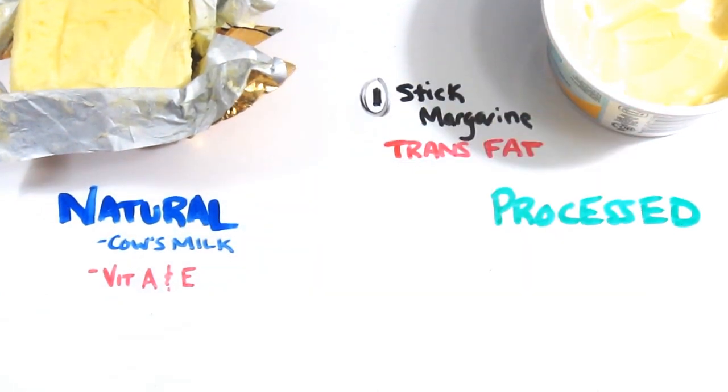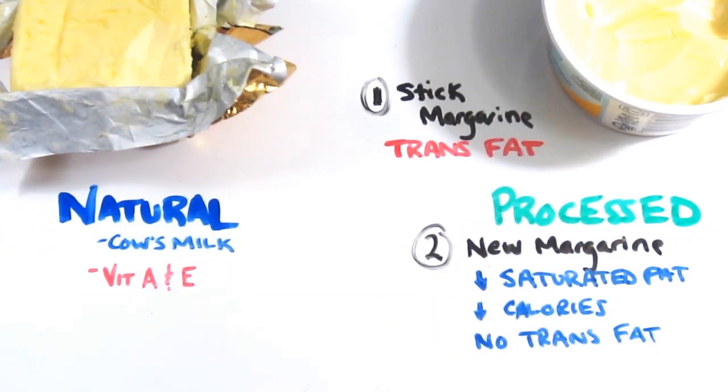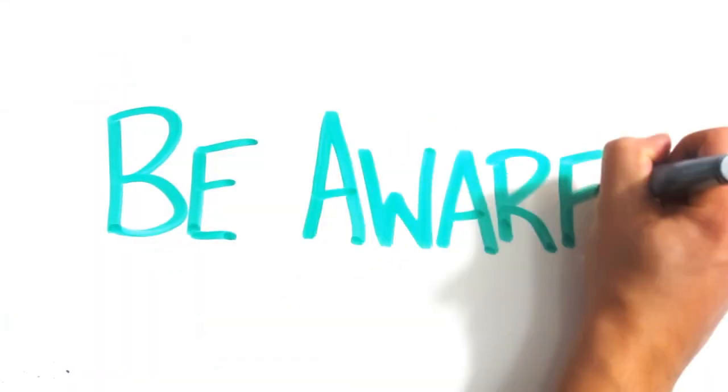But margarines now vary so much, it's difficult to make an accurate comparison. Many hard stick margarines are still high in trans fats and much worse than butter. But some newer margarines are much lower in saturated fat, lower their calorie count, and contain zero trans fats.